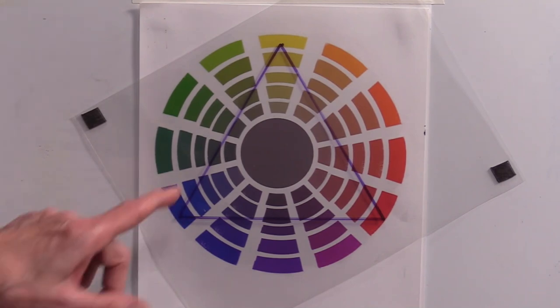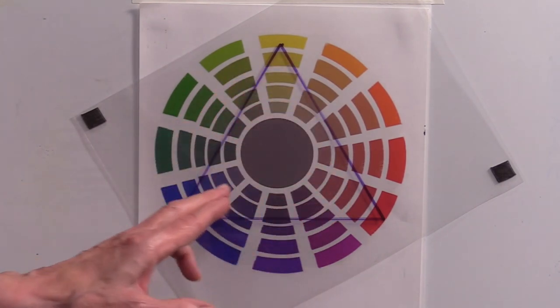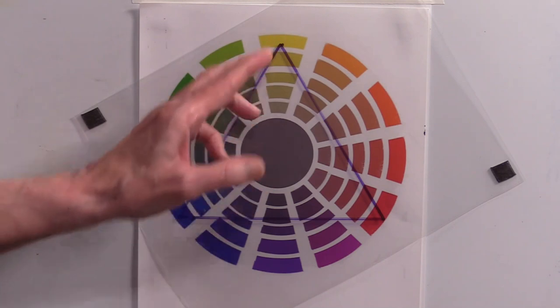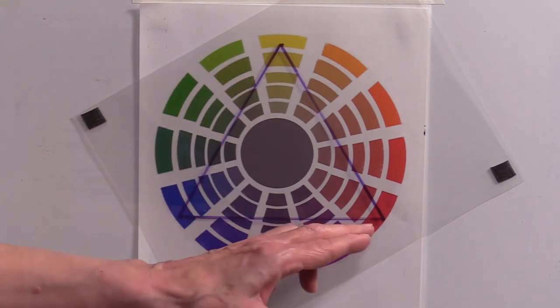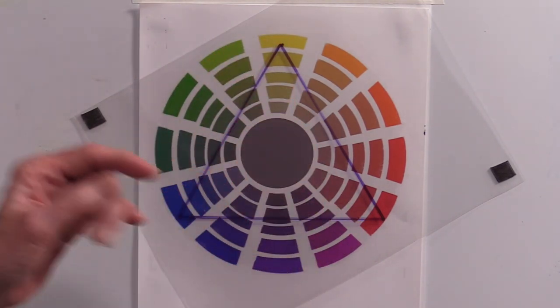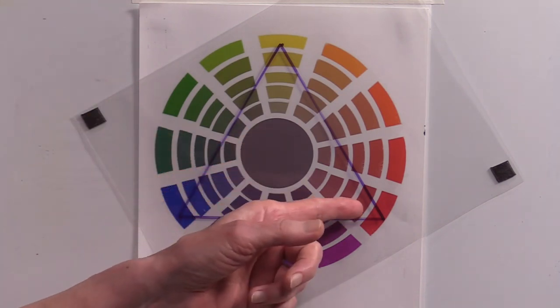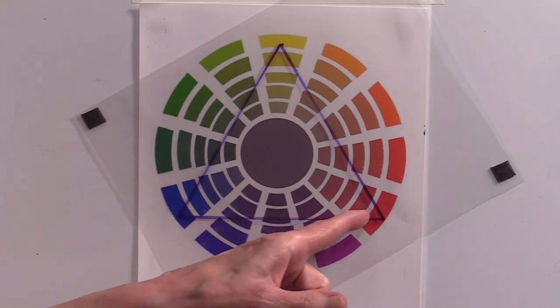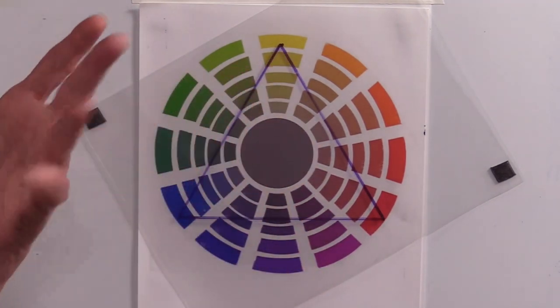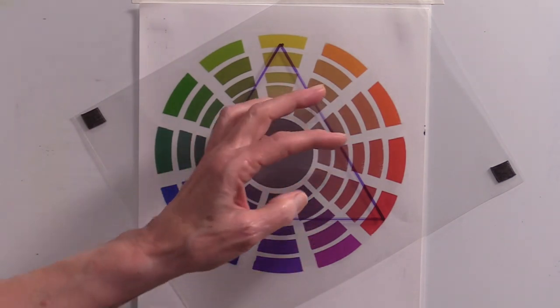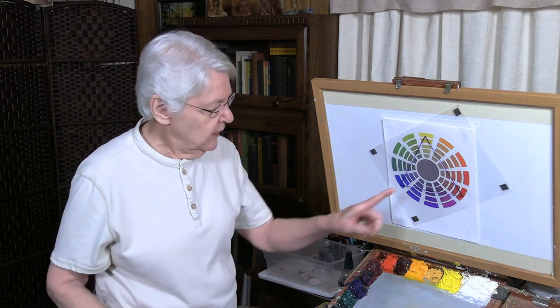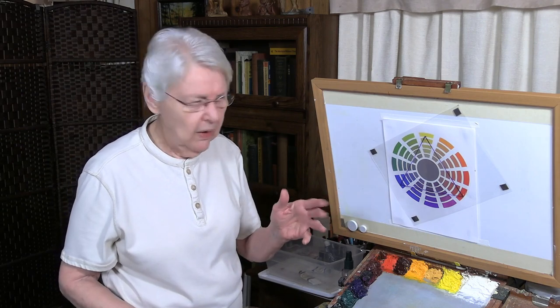Now what that means is all the colors, all the possibilities between yellow, blue, and red mixed together and their different values. This doesn't show the values. This does show the reduction in intensity and it does show the hues. But it doesn't show the value. So you have all these mixtures in here along with white to raise the value and then darker versions to lower the values. So that is your gamut.